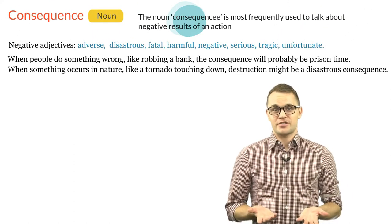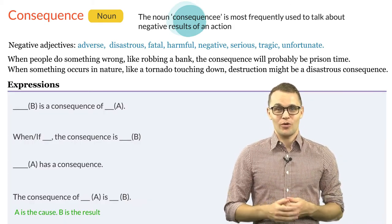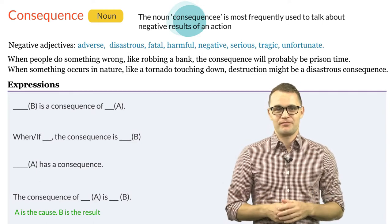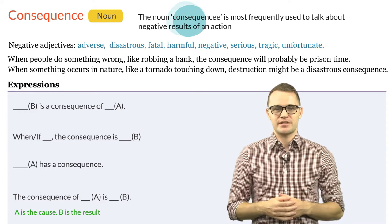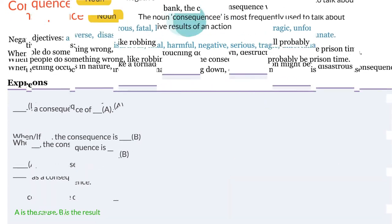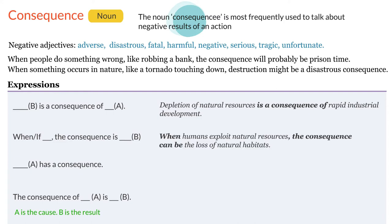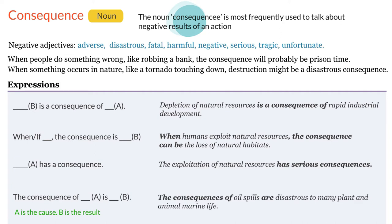The following patterns and expressions are commonly used with the noun consequence: B is a consequence of A, or when something happens the consequence is B, or A has a certain kind of consequence, or the consequence of A is B. For example: depletion of natural resources is a consequence of rapid industrial development. When humans exploit natural resources, the consequence can be the loss of natural habitat. The exploitation of natural resources has serious consequences. The consequences of oil spills are disastrous to many plant and animal marine life.